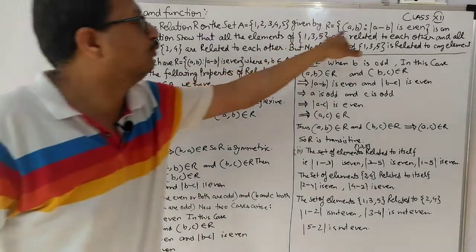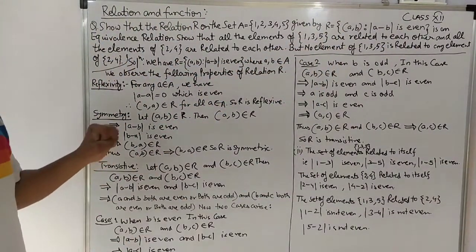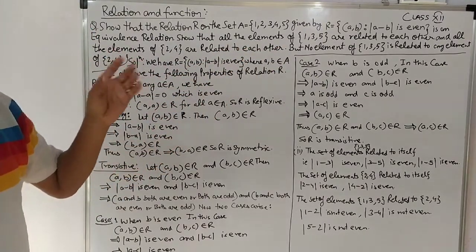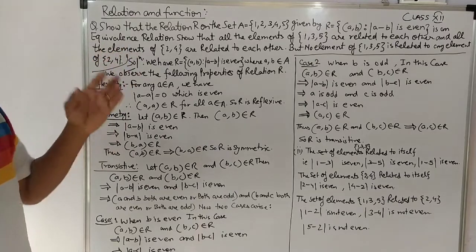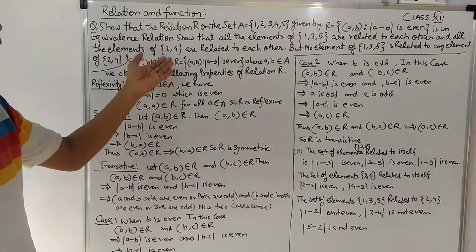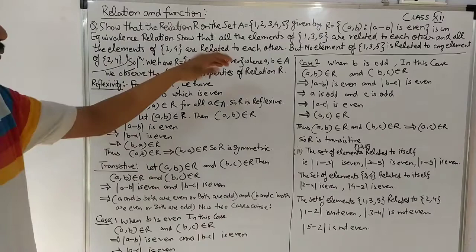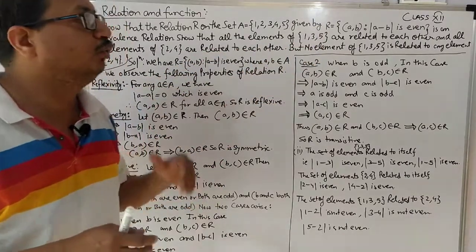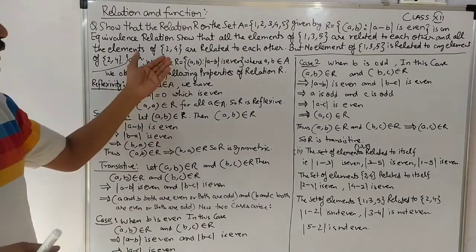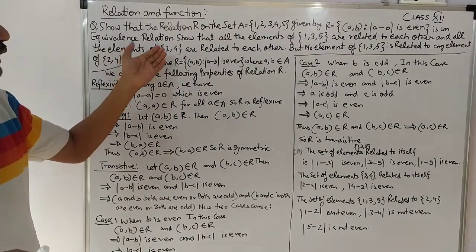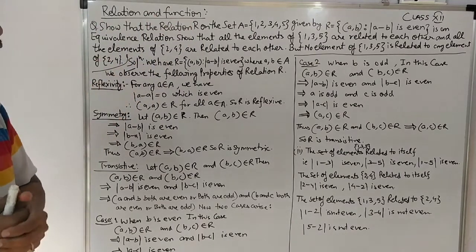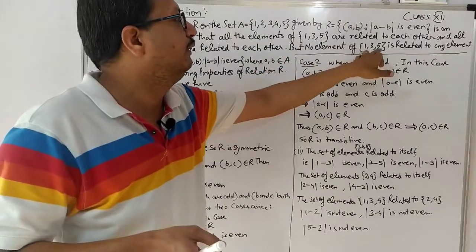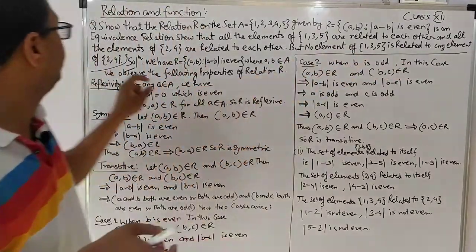आपको इस relation को equivalence relation show करना है। Show that all the elements of {1, 3, 5} are related to each other and all the elements of {2, 4} are related to each other. और साथ में यह question भी पूछा गया है कि अगर set {1, 3, 5} हो या set {2, 4} हो तो क्या ये relation satisfy हो रहा है। But no element of {1, 3, 5} is related to any element of {2, 4}.